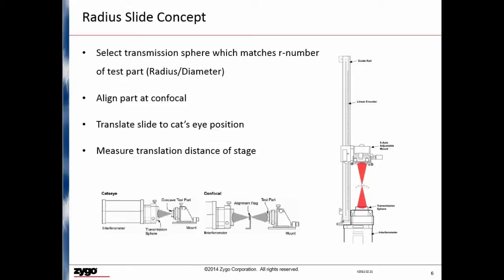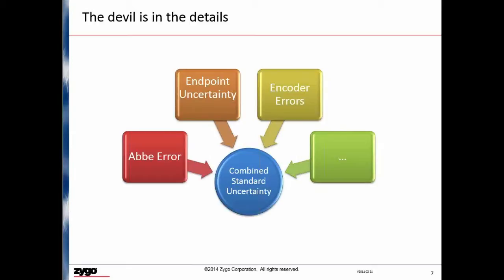The concept of an interferometric radius slide is simple. The devil is in the details. There are three major contributors to uncertainty and numerous small contributors. Today we will look at each of the major uncertainties individually and discuss how they can be minimized.